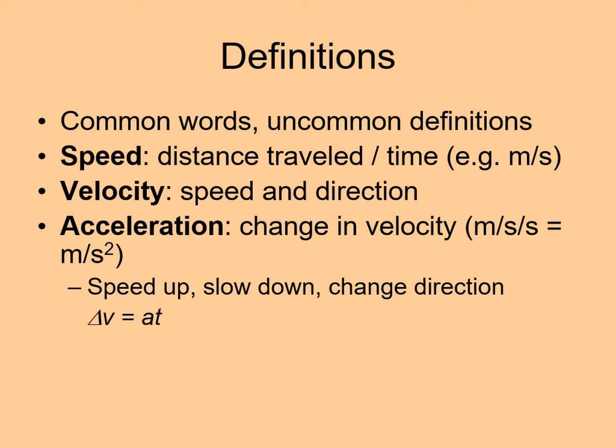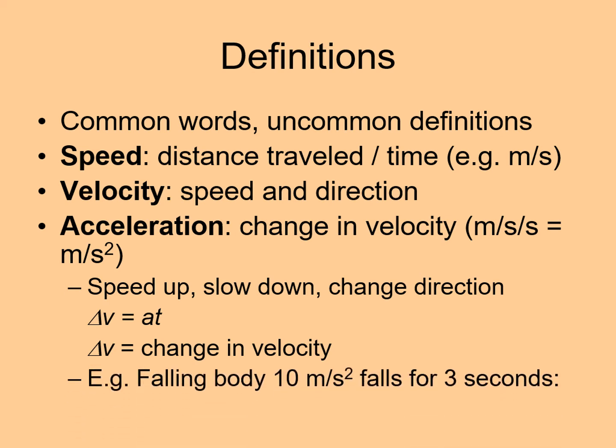The formula that describes this is delta V equals A times T. The triangle at the start is the Greek letter delta. And in math, this symbol generally means change. So delta V means how much the velocity changes. A is the acceleration and T is the time. A good example of accelerating is a falling body. When something falls, it has an acceleration of almost 10 meters per second squared. So if you drop something and it takes 3 seconds to reach the ground, it will be moving at 3 times 10 or 30 meters per second by the time it hits.